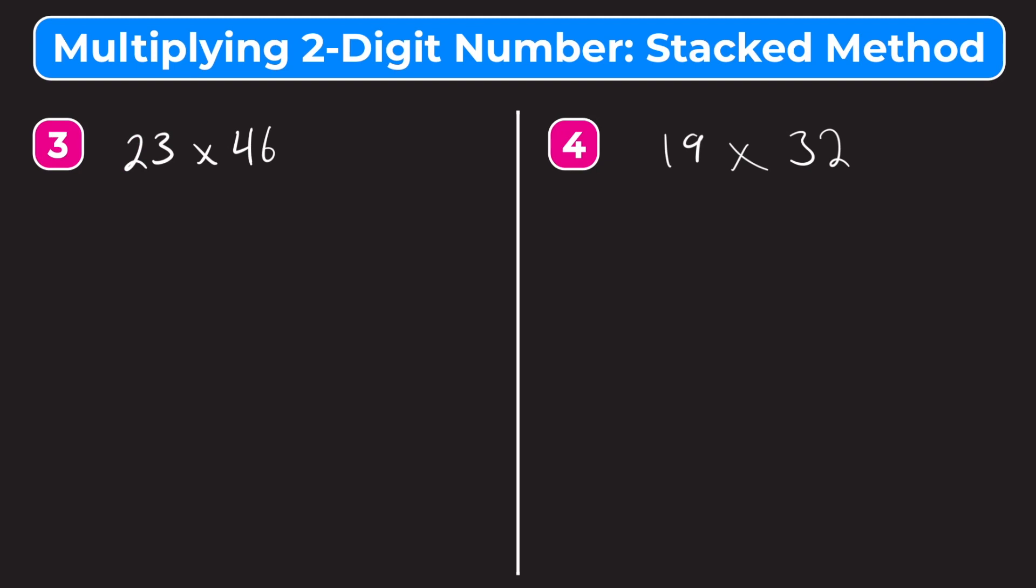So here we have a couple more examples. You can feel free to pause the video and try these on your own if you feel confident, or else you can just follow along with me as we go through to get the answer. So for number three, we have 23 times 46. So again, let's rewrite this problem, putting our larger number on top. That would be 46. So we have 46 times 23, being careful to line up the place values.